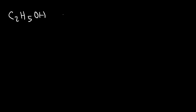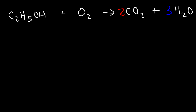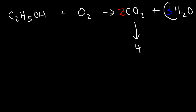Let's try another combustion reaction with ethanol, C₂H₅OH, plus O₂, producing carbon dioxide and water. There are 2 carbon atoms on the left, so I put a 2 in front of CO₂. Now let's move on to hydrogen. I have 5 + 1, or 6 hydrogen atoms on the left side, so I need 6 on the right. 6 ÷ 2 = 3, so I put a 3 in front of H₂O. Now we have 4 oxygen atoms from the 2 CO₂ molecules (2 × 2 = 4) and 3 oxygen atoms from the 3 water molecules.